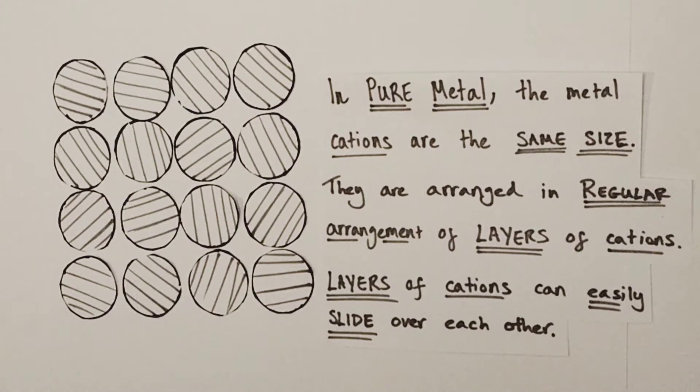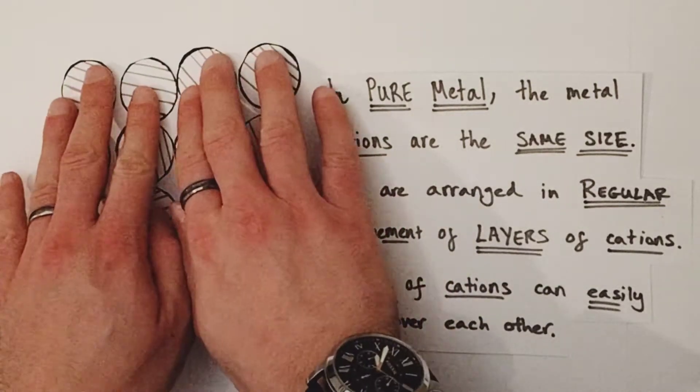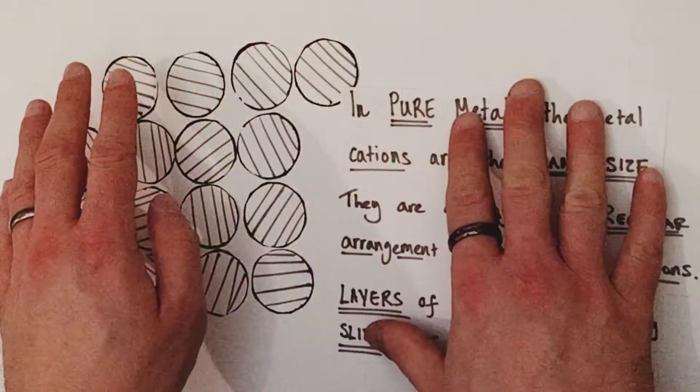That means that the layers of cations can easily slide over each other without breaking the strong metallic bonds that are holding the structure together.